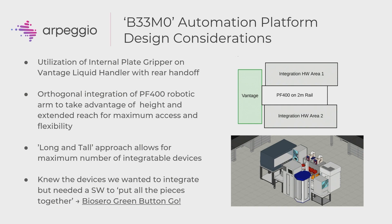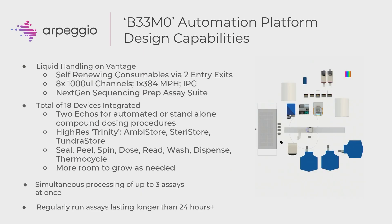That long-and-tall layout is what our Biosero work cell looks like. All liquid handling is taken care of by the Hamilton Vantage with self-consuming consumables via two entry exits. It's a one-arm system with eight channels, 384 MPH and IPG for moving plates on and off the Vantage deck. This covers everything you need for NGS: bead purifications, SP column prep, normalizations, quantitation — anything requiring liquid handling. In terms of integrated devices, we have the high-res Trinity: the ambient store, the stereo store, and the tundra store — ambient storage, incubation, and freezing.